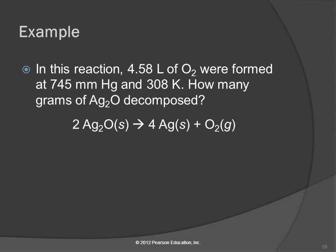Here's an example: 4.58 liters of oxygen were formed at 745 millimeters of mercury and 308 kelvin. How many grams of silver oxide decomposed? This is a decomposition reaction — silver oxide decomposing into silver and oxygen. Let's take this information and write it under our balanced chemical equation, under oxygen.